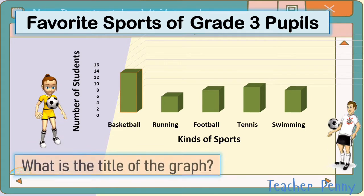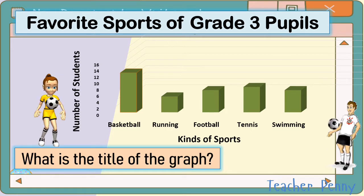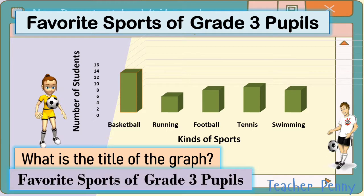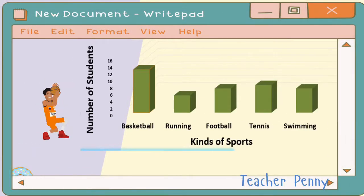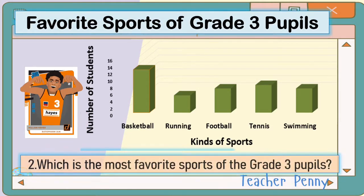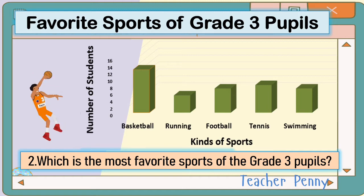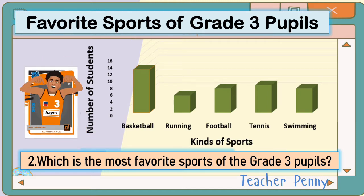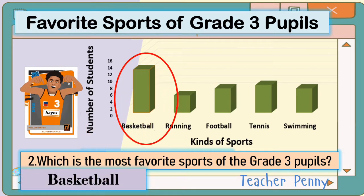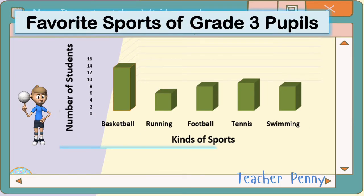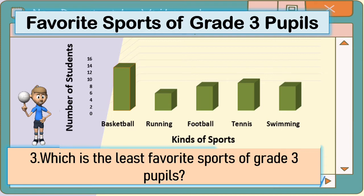Now answer number 1: what is the title of the graph? The answer is Favorite Sports of Grade 3 Pupils. For number 2: which is the most favorite sport of the grade 3 pupils? The answer based on the bar graph is basketball. For number 3: which is the least favorite sport? The answer is running.